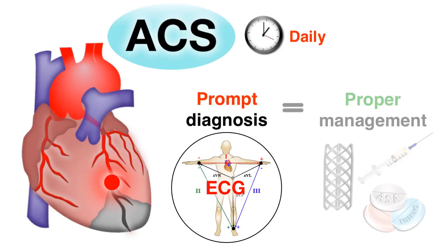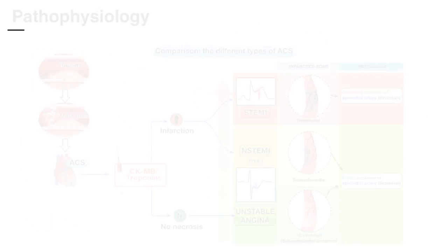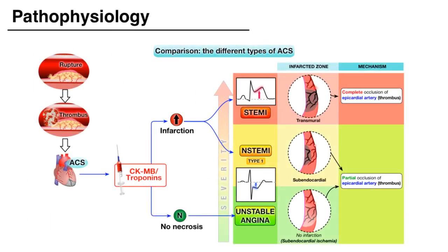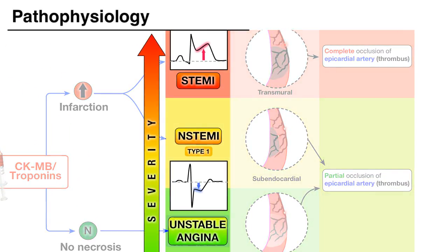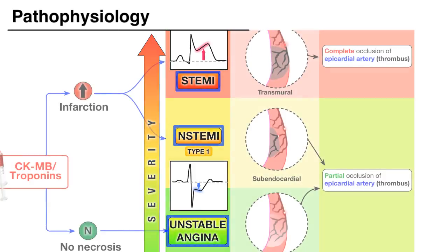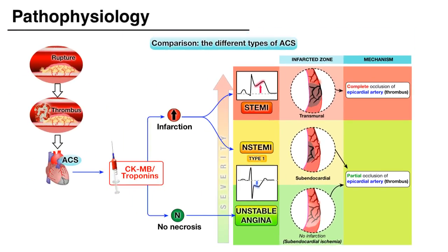Before understanding the ECG manifestations of ACS, let's first go over the pathophysiology of acute coronary syndrome. Acute coronary syndromes represent the spectrum of myocardial ischemia. Clinically, the spectrum extends from unstable angina and NSTEMI all the way to STEMI. What they have in common is their pathophysiology.